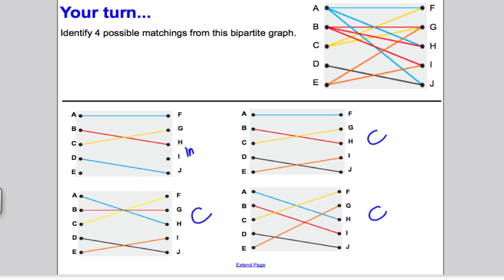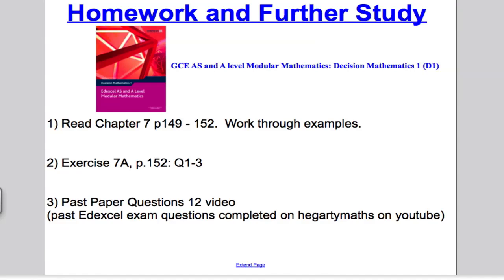A nice and easy introduction to bipartite graphs and matching, what they are. Just to finish, I suggest for further homework, read chapter 7, page 149 to 152, have a look at their examples. Do exercise 7a, page 152, questions 1 to 3. And lastly, have a look at the past paper questions video 12, where some of the definitions we've talked about here come up in past paper exams. After that, make sure you tune in to the next tutorial, tutorial 13, which will be on the maximum matching algorithm, which takes these ideas further. Thank you for watching. I hope you found it useful in your study for decision 1 maths.